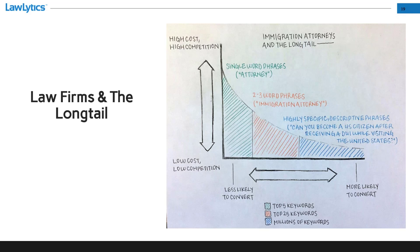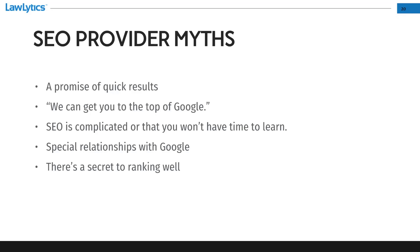When you write a significant volume of content addressing specific questions, you're not only optimizing for those specific phrases but also end up optimizing for the basic attorney-related terms they contain. One of the major things Google is working on right now with algorithms like RankBrain is the artificial intelligence aspect of search — particularly understanding intent. When a potential client makes a search that doesn't necessarily use words like 'immigration attorney,' Google is trying to understand if that person may be looking for an immigration attorney's assistance. Now that we've covered how this works, let's talk about some SEO-related myths.